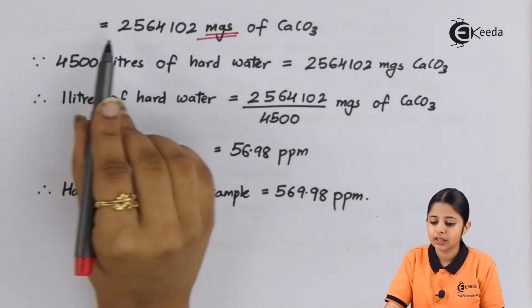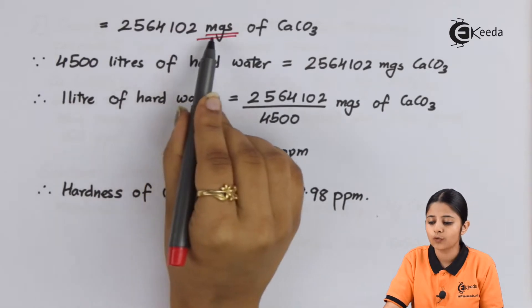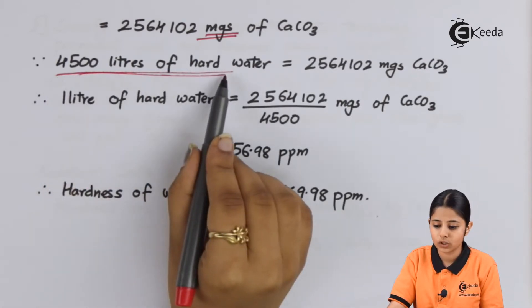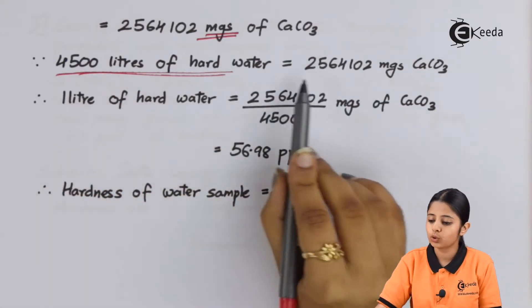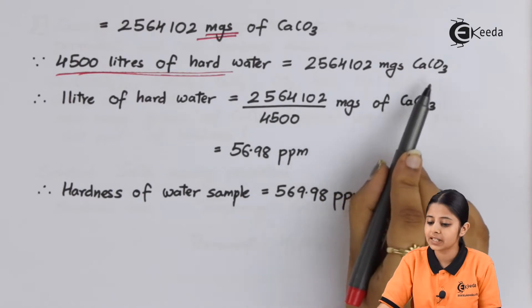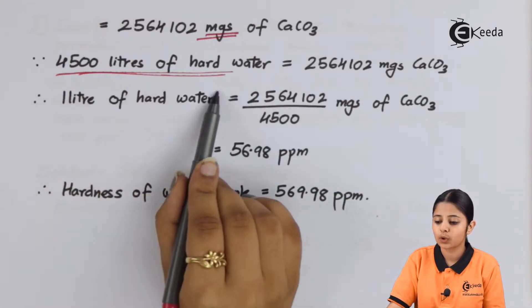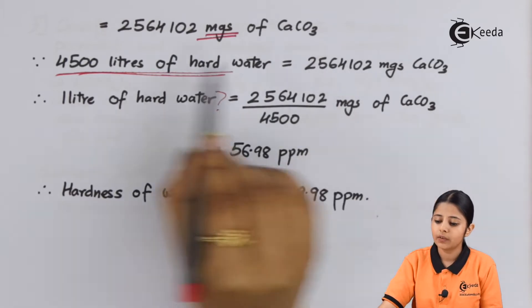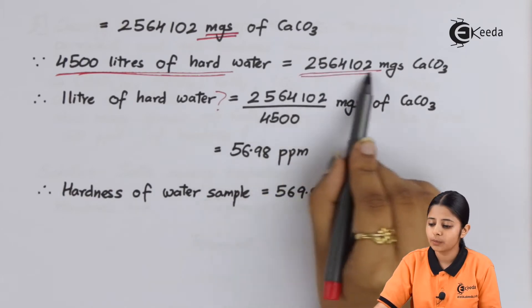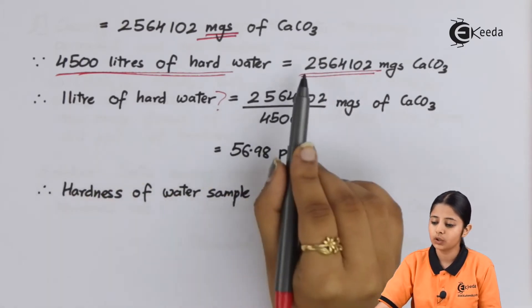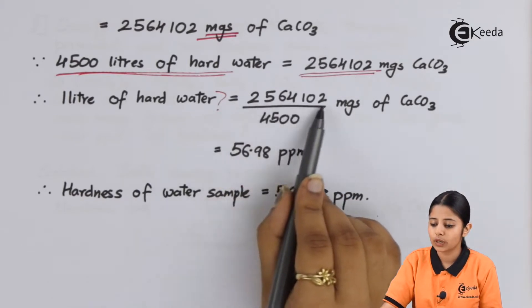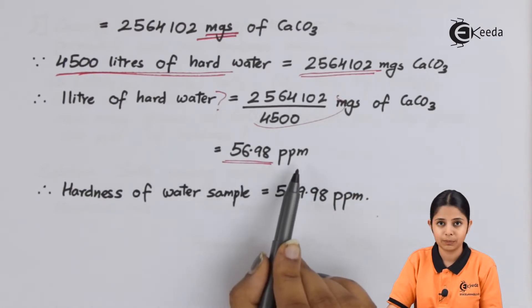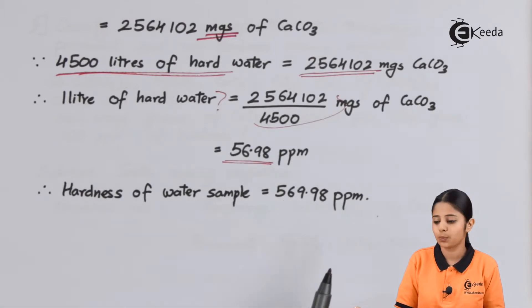Converting grams to milligrams, that is 2,564.102 milligrams of CaCO₃. Since 4,500 litres of hard water correspond to 2,564.102 milligrams of CaCO₃, then 1 litre of hard water corresponds to 2,564.102 ÷ 4,500 = 0.5698 mg/L. When you calculate this, you get 56.98 ppm. Therefore, the total hardness is 56.98 ppm.